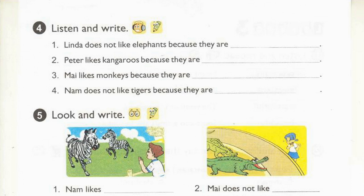3. What are you doing, Mai? I'm drawing a monkey. Do you like monkeys? Yes, I do. Why? Because they are funny. 4. I want to see tigers. I don't like tigers. Why not, Nam? Because they are scary. Scary? Yes, very scary.